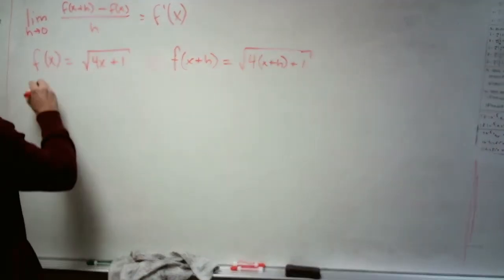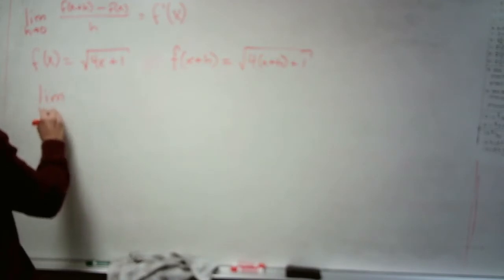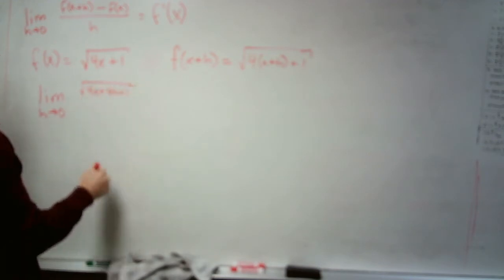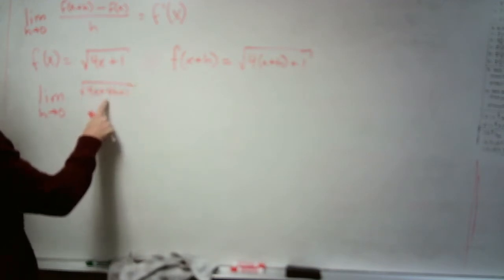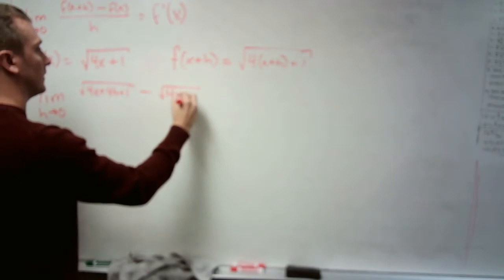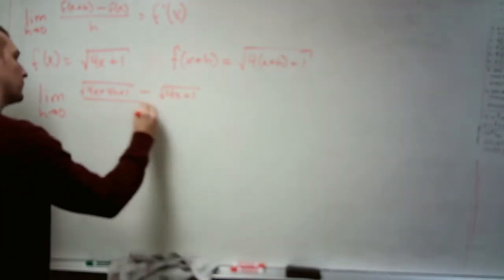And then we go straight to our definition and see if we can simplify this business down. So f of x plus h, I've distributed 4, minus f of x, all divided by h.